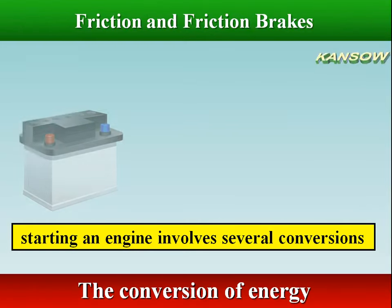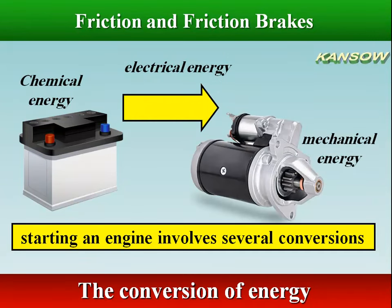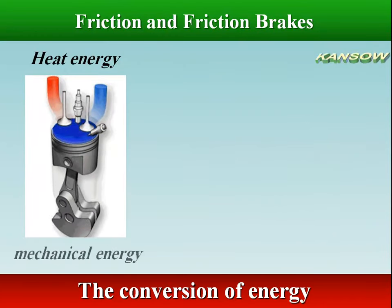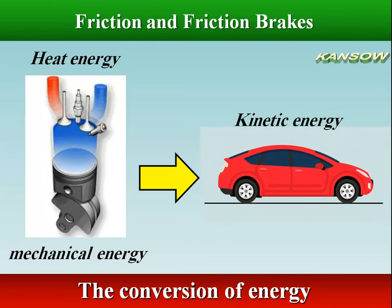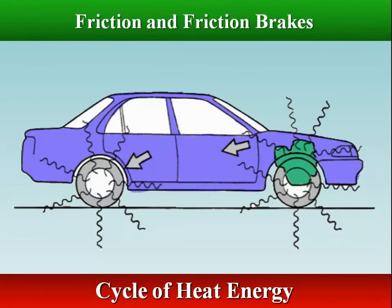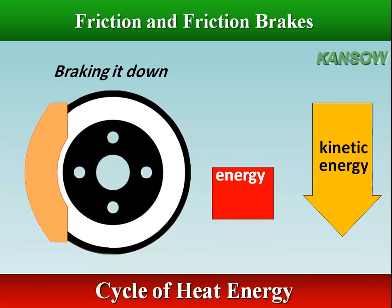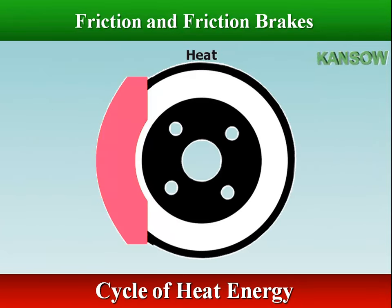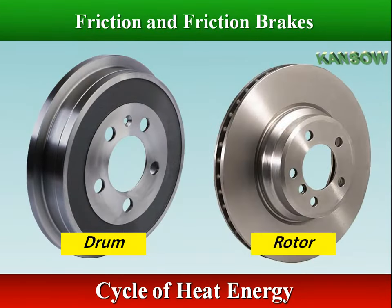Chemical energy in the battery is converted to electrical energy in the starter, which is converted to mechanical energy as it cranks the engine. Burning hydrocarbons and oxygen in the engine creates heat energy, which is converted into kinetic energy as the vehicle is put into motion. During braking, the vehicle is stopped by converting the kinetic energy of the vehicle to heat energy, which is created in the brakes by friction between moving and non-moving surfaces at each wheel. The converted heat is absorbed by the brake drums and rotors and dissipated to the surrounding air.